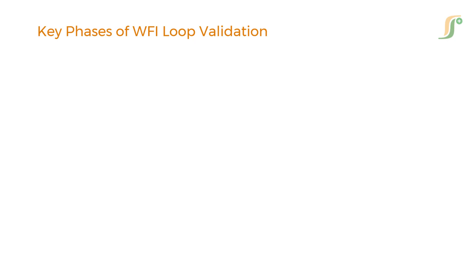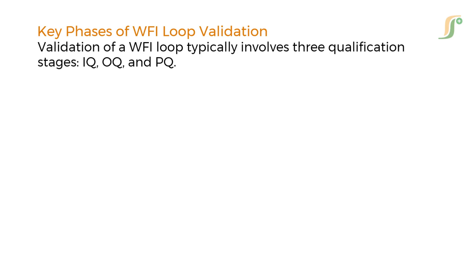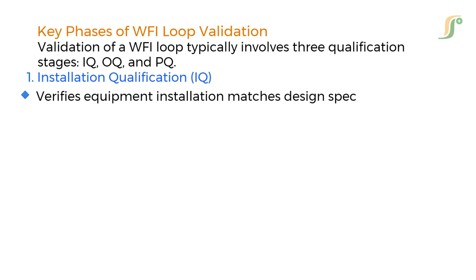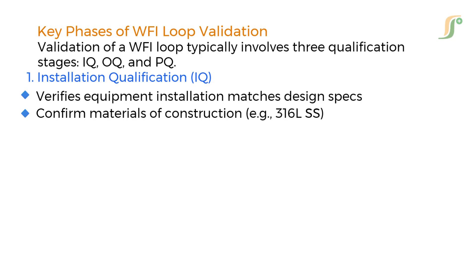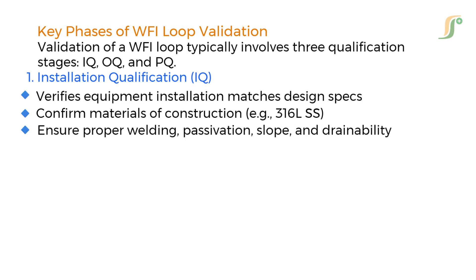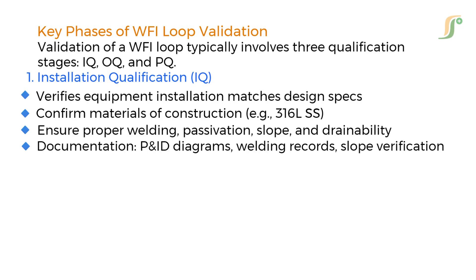Validation of a WFI loop typically involves three qualification stages: IQ, OQ, and PQ. First, Installation Qualification verifies that equipment installation matches design specifications. Confirm materials of construction — 316L stainless steel. Ensure proper welding, passivation, slope, and drainability in tanks and pipes. Documentation, P&ID diagrams, welding records, and slope verification are necessary to complete.